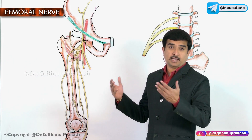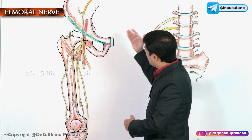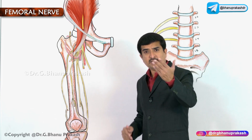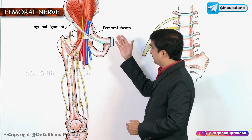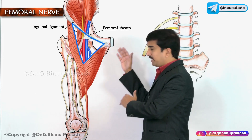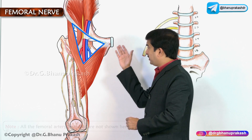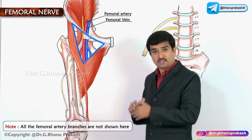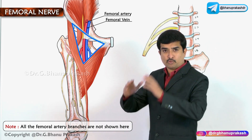After it emerges from the lumbar plexus, the femoral nerve emerges from the lateral border of the psoas major and passes between the psoas major and iliacus muscle. It then enters the thigh behind the inguinal ligament, lateral to the femoral sheath. The femoral sheath encloses the femoral artery and femoral vein, which is why the femoral nerve is described as lateral to the femoral sheath.